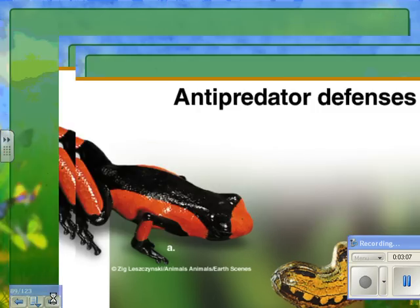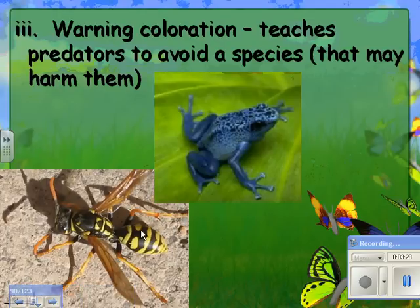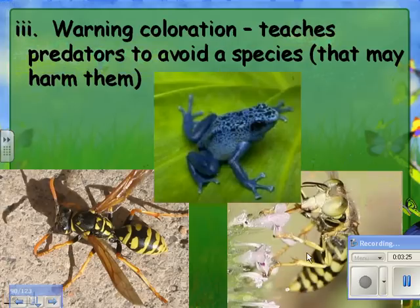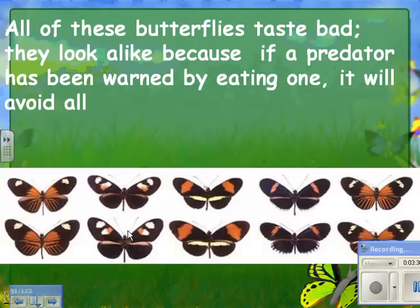Warning coloration teaches predators to avoid a species that could harm them. A poisonous frog can advertise this by being bright blue, or a wasp is black and yellow to warn predators that it stings. These butterflies all taste bad, and interestingly they all look alike — this helps predators learn to avoid them, so an individual lives longer if it both produces the bad substance and resembles others that do.